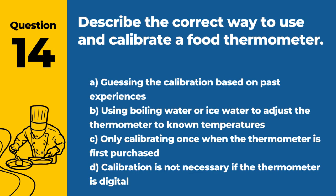Question 14. Describe the correct way to use and calibrate a food thermometer. The answer is B: Using boiling water or ice water to adjust the thermometer to known temperatures. Regular calibration ensures accurate temperature readings.